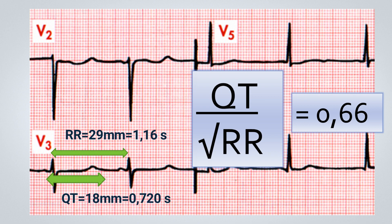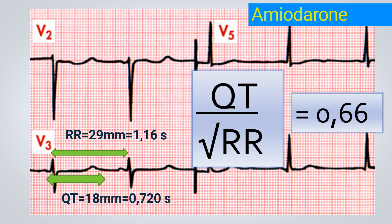Among the medications mentioned earlier, which ones could prolong the QT interval? Of all the options, amiodarone is the likely cause of this ECG alteration. Remember, in such cases where you have an extremely prolonged QT interval and the patient is using a medication that can prolong it — especially when it exceeds 500 milliseconds — the medication should be discontinued. It is crucial to check the potassium and magnesium levels of these patients, aiming for the upper limit of normal, as hypokalemia and hypomagnesemia can further predispose to ventricular tachyarrhythmias.